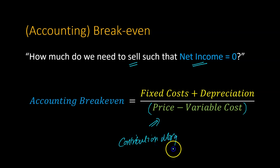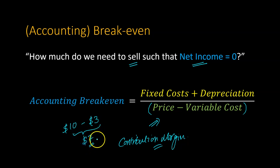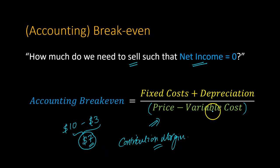The idea behind accounting break-even is straightforward. Suppose you're selling something for $10 and your variable costs are $3. That means for every unit you're selling, you're making a margin of $7. How many times do you need to make $7 to cover all the fixed costs you incur, such that your net income equals zero? Because this $7 is in excess of just your variable cost — you still need to cover your fixed costs.